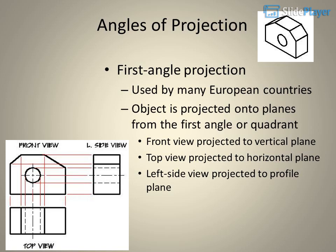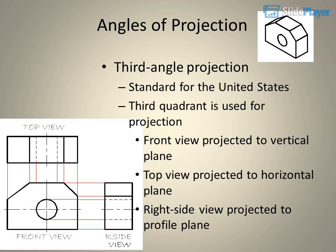First angle projection is used by many European countries. The object is projected onto planes from the first angle or quadrant. The front view is projected to the vertical plane, the top view is projected to the horizontal plane, and the left side view is projected to the profile plane.